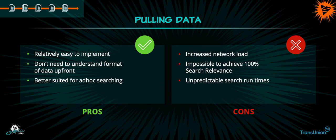Let's talk about pulling the data. The pros behind pulling the data: it's relatively easy to implement — this would represent either federated search or peering to your indexers and running searches across that over the network and bringing all that data back. Because of that, you don't necessarily have to understand the format of the data up front; you just run a query and it will hit those search peers and return the data it needs to return. This is pretty good for ad hoc type searching, one-off type searching where you don't necessarily really know what you want to look for but you want to look for something.